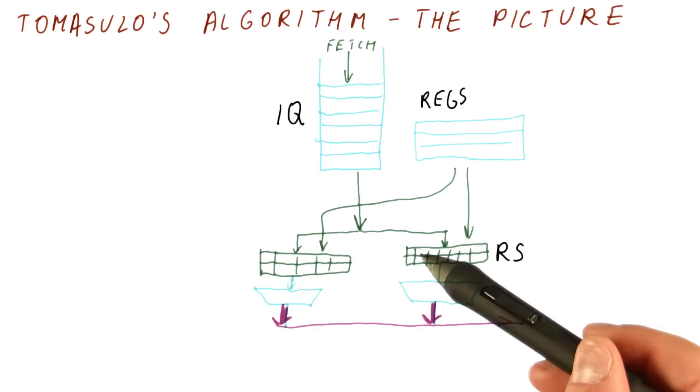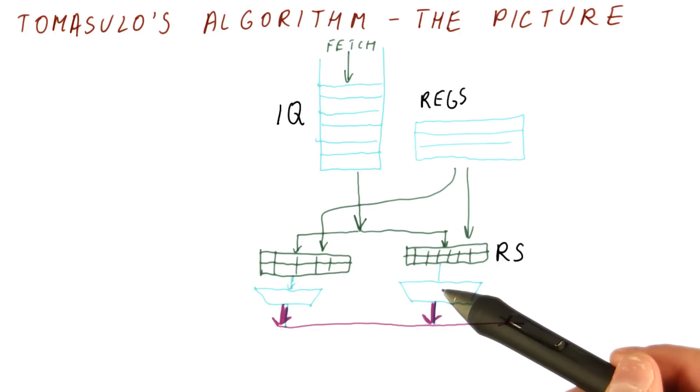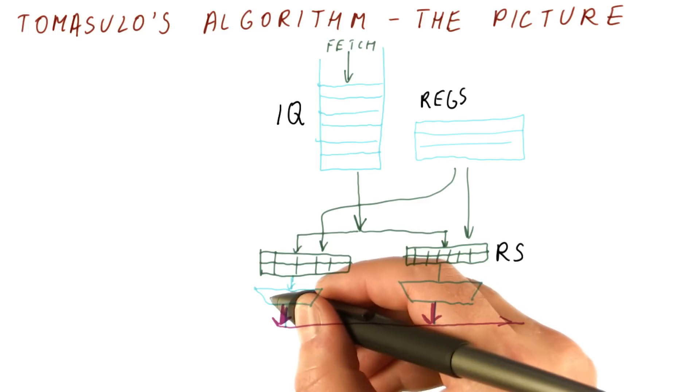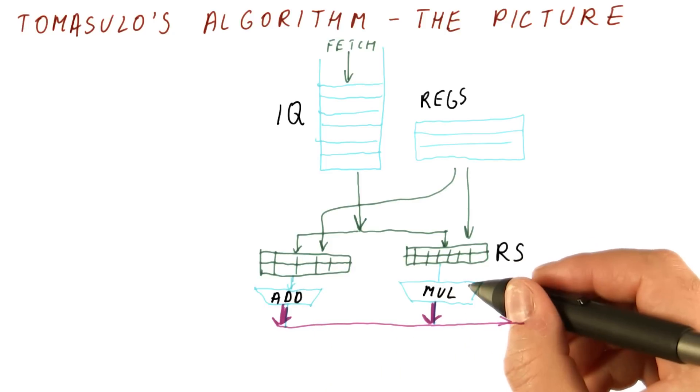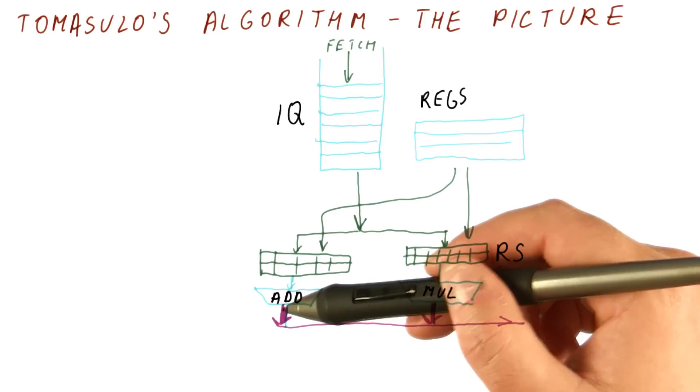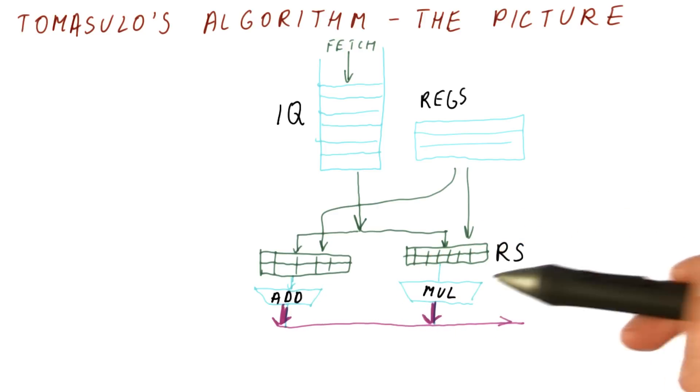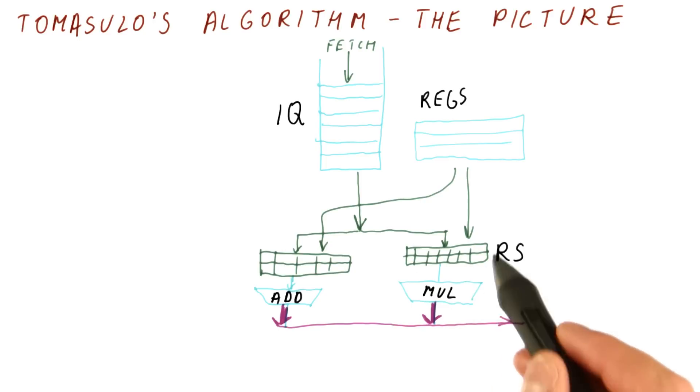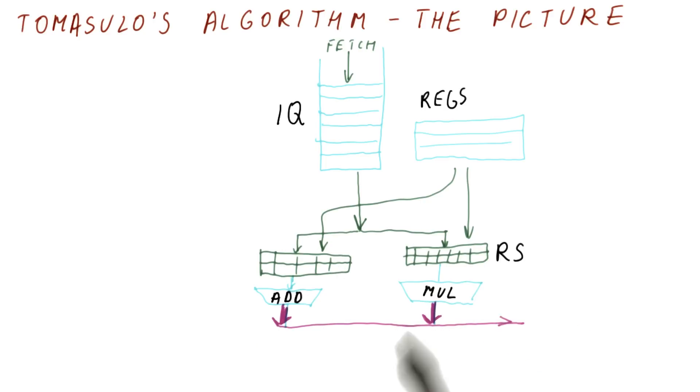Once an instruction is ready to execute, it goes to an execution unit. You can have different types of execution units. For example, this is an adder, and this is a multiplier. Simple floating point instructions would be done in the adder unit, and the more complicated, like multiply and divide, would be done in the multiplier unit. Each of these units had separate reservation stations where instructions going to that unit would wait.